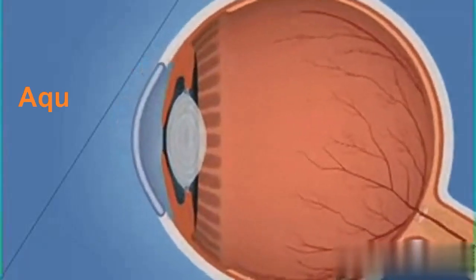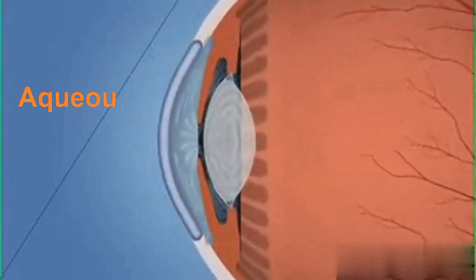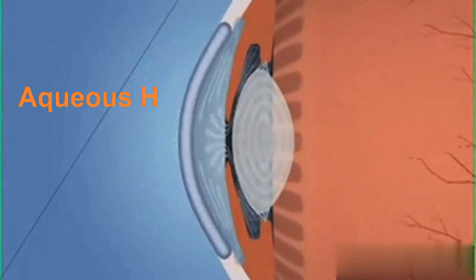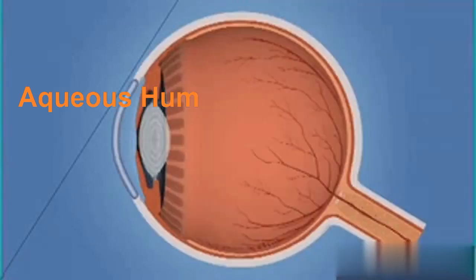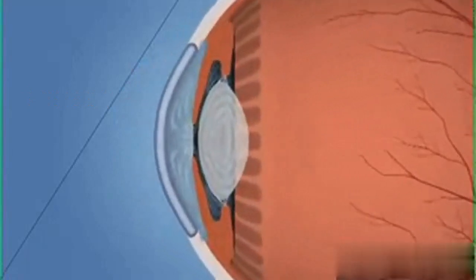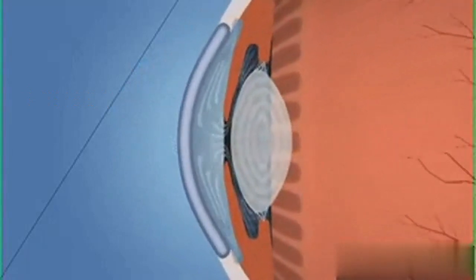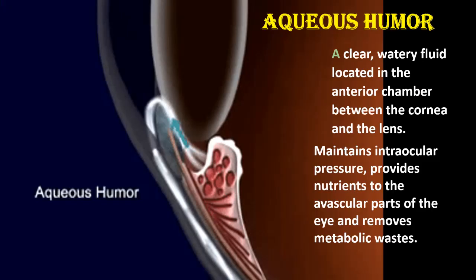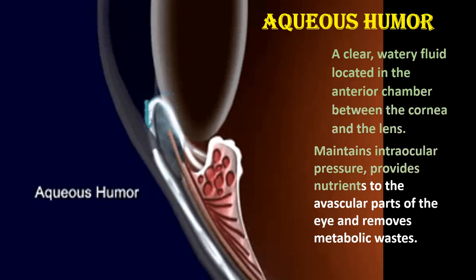Aqueous humor: A clear, watery fluid located in the anterior chamber between the cornea and the lens. It maintains intraocular pressure, provides nutrients to the avascular parts of the eye like the lens and cornea, and removes metabolic waste.